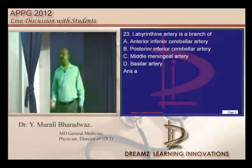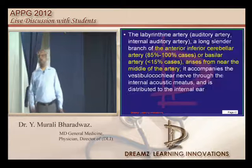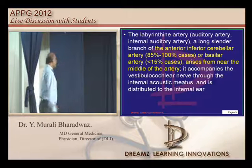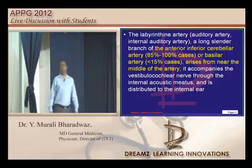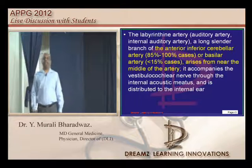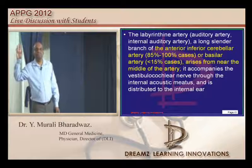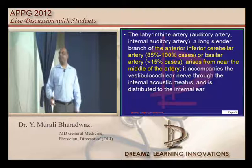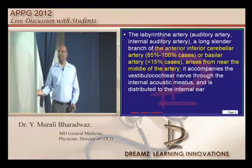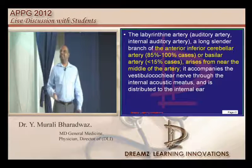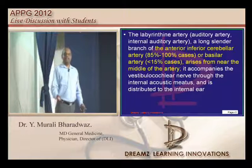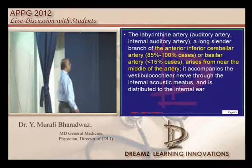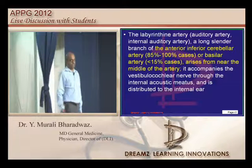The labyrinthine artery: PICA or AICA? You have to be very sure. The labyrinthine artery in about 85 percent of cases arises from the anterior inferior cerebellar artery (AICA), and 15 percent of cases from the basilar artery. So 85 percent of cases — AICA is the answer.